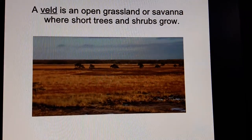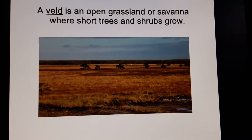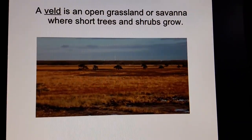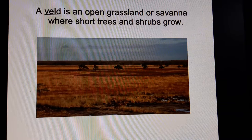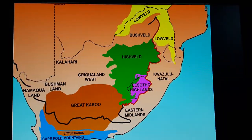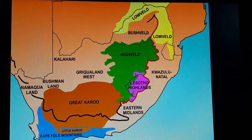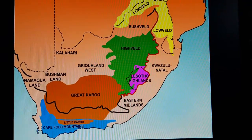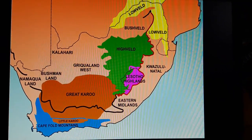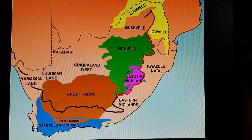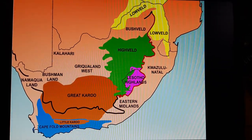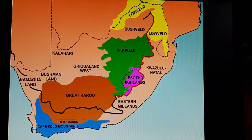There are different types of veld depending upon elevation, climate and flora. For example, high veld, middle veld, low veld, bush veld, thorn veld and grass veld. The veld are located on plateaus of heights between 150 to 1800 meters above sea level.